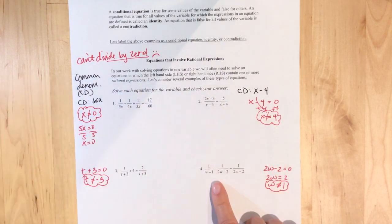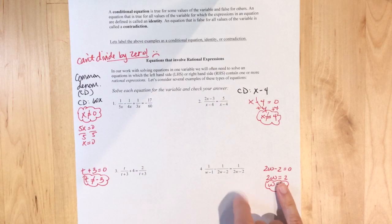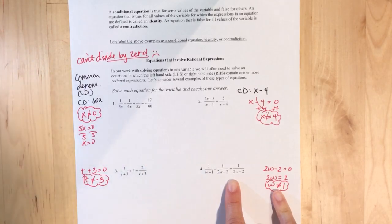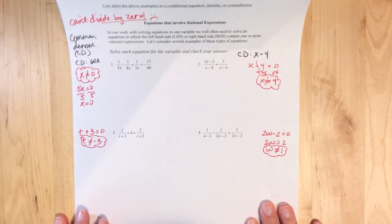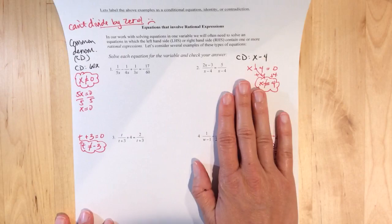they are right because we cannot use one as an answer for four because it would make us divide by zero. And again, like I said, that's the one thing we actually cannot do. So that's just kind of the setup for all of these four examples.